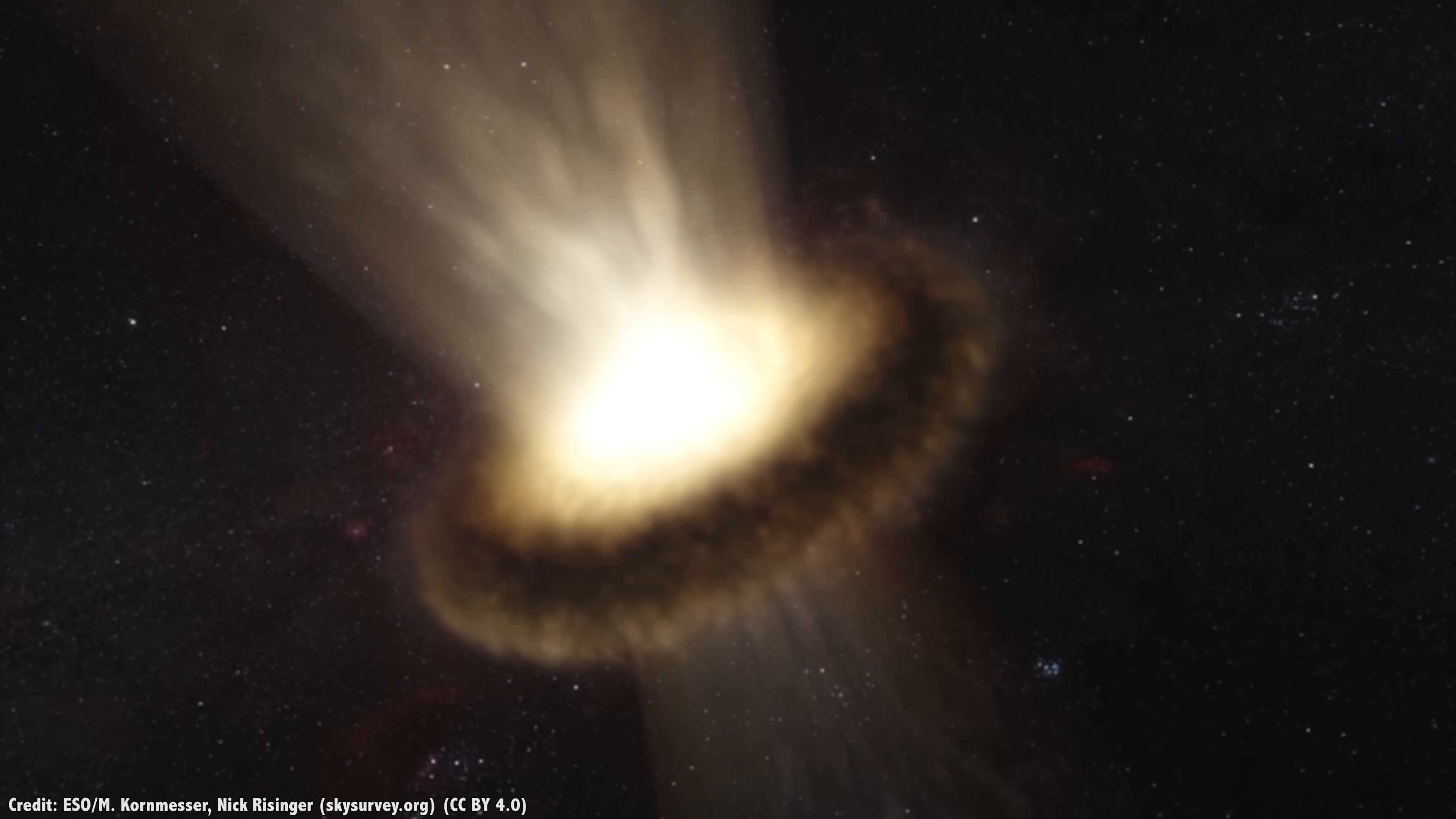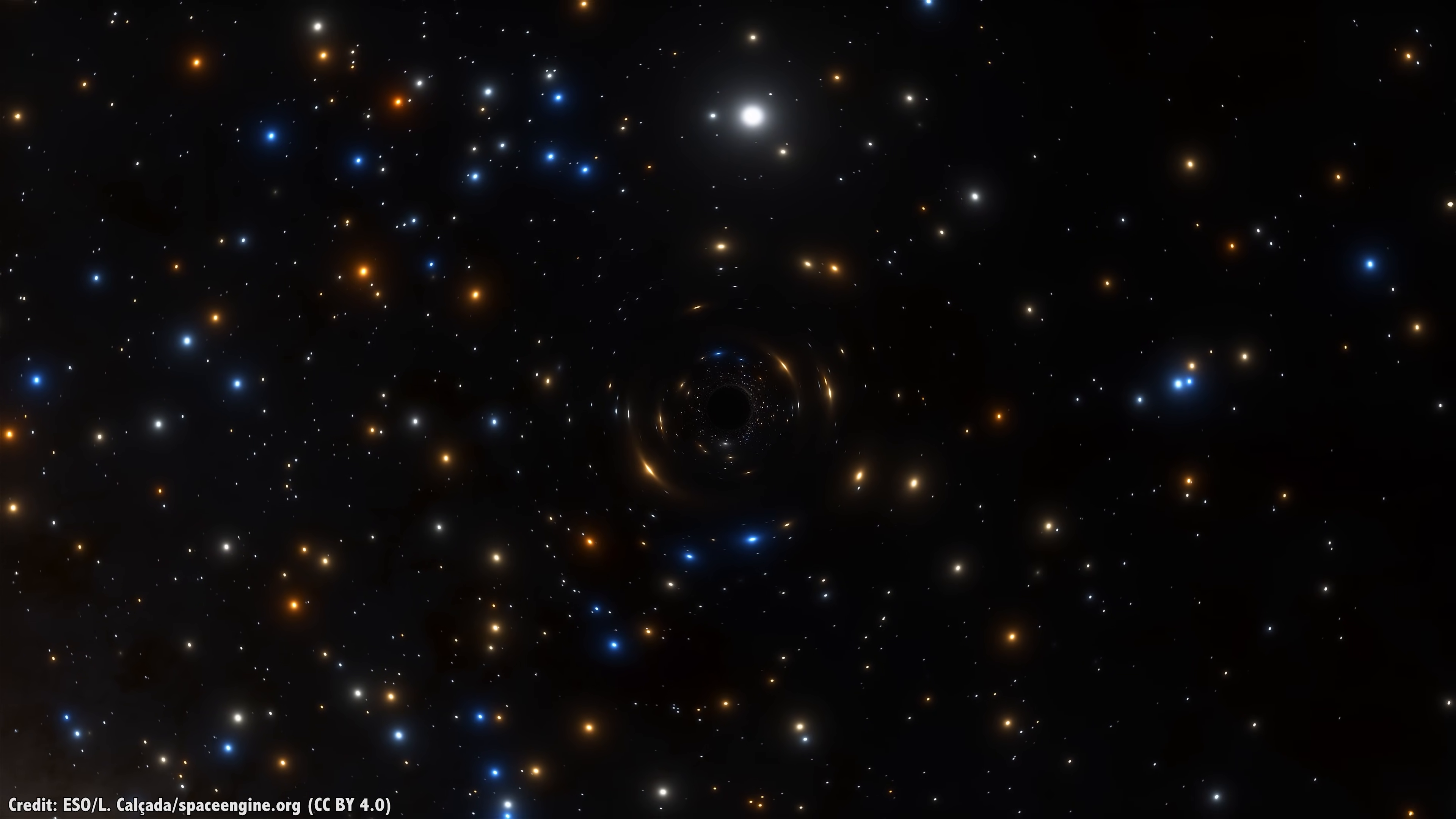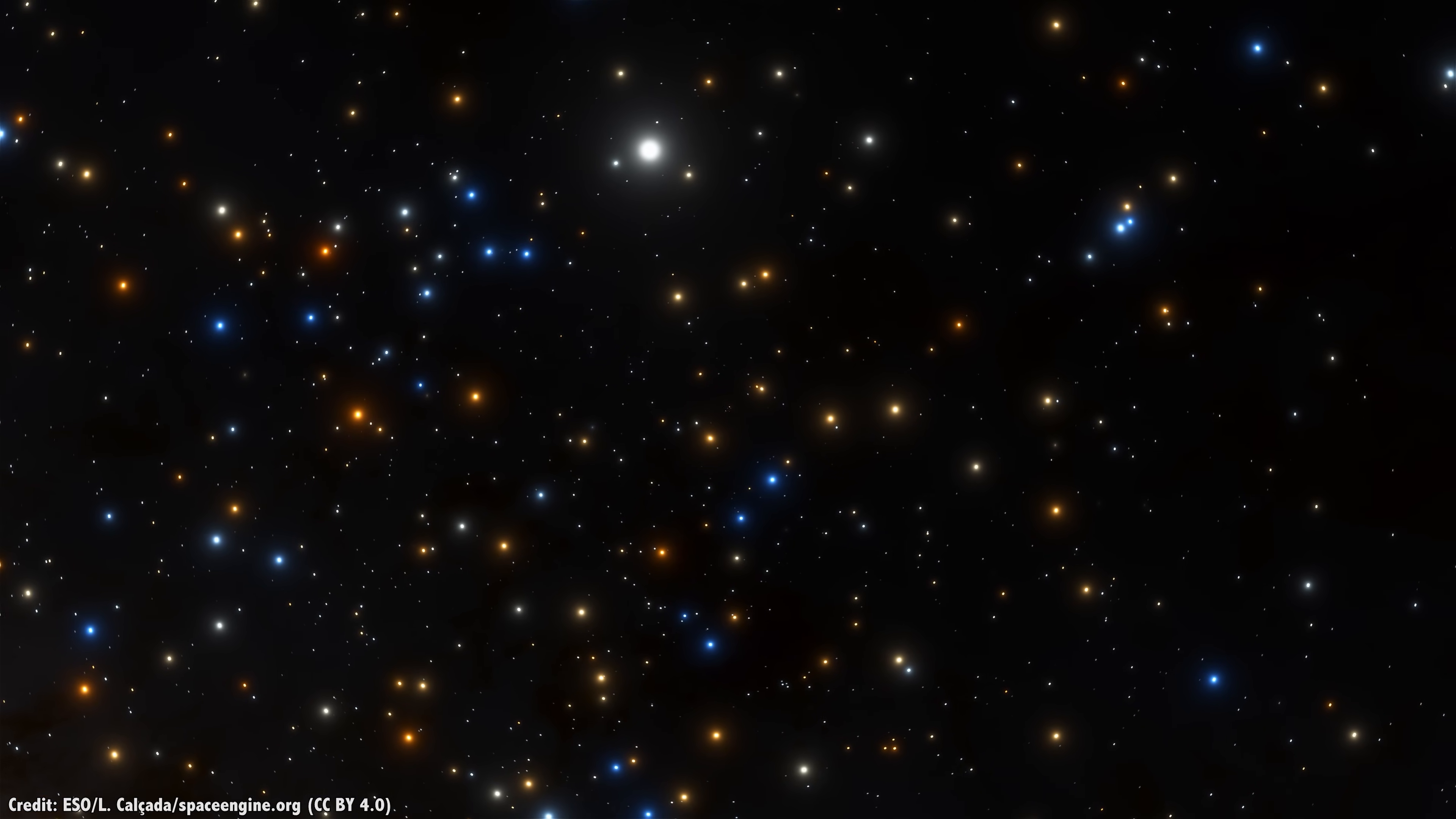Another way to search for primordial black holes is to detect when they disappear. In addition to proposing the idea that these tiny black holes exist in the first place, Hawking calculated that black holes should slowly evaporate over vast periods of time. The less mass of the black hole, the more quickly it gives off radiation and the faster it loses mass. In fact, at this point in the age of the universe, any black hole with less than 100 billion kilograms will have already evaporated.